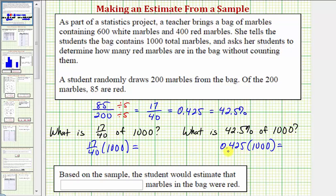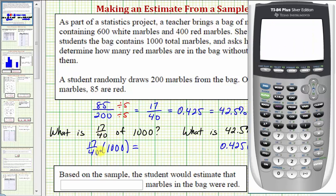We'll notice here, because we're multiplying by 1,000, we could just move the decimal point to the right three places and find our product. Let's check both of these on the calculator. For 17/40 times 1,000, I'd probably put the fraction in parentheses. So there's 17/40, and then times 1,000, which equals 425.